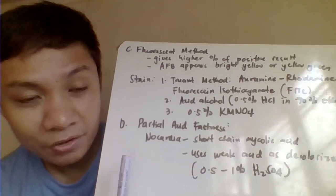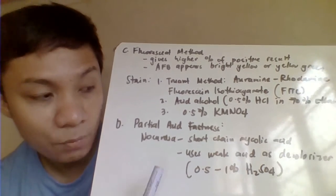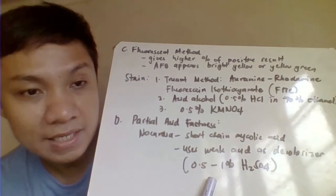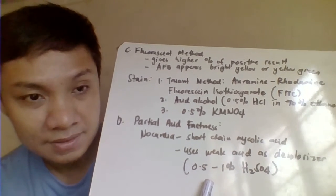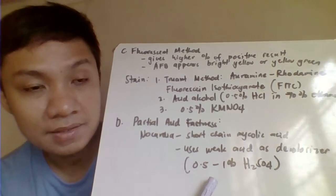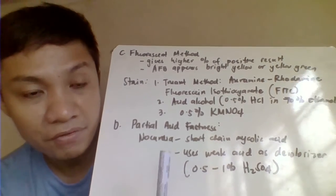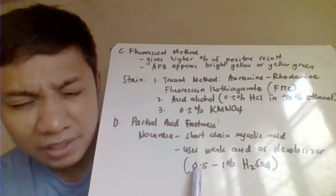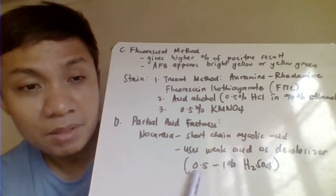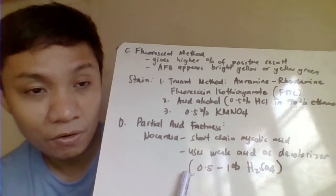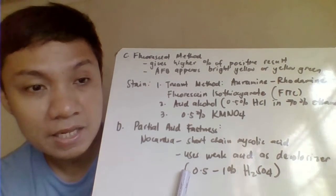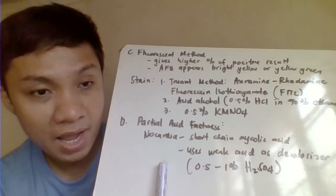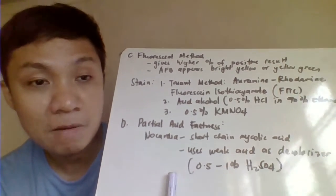You understand? Pag Nocardia, gumagamit tayo ng decolorizer na weak acid. Kung ito ginamit mo na decolorizer is a weak acid, ang Nocardia natin hindi siya ma-decolorize. Okay, and therefore, for example, the color of your primary stain is your Carbolfuchsin so mag-red ang color na Nocardia. Pero pag ang ginamit mo na decolorizer is the acid alcohol that's being utilized for the Ziehl-Neelsen or Kinyon method, ma-decolorize ang Nocardia. Pag ma-decolorize ang Nocardia, ano mangyari? Magiging non-acid-fast siya magiging blue ang color natin.